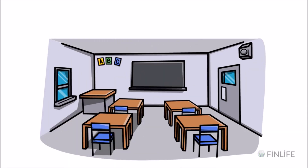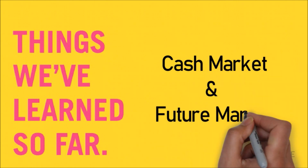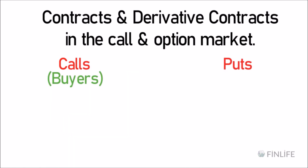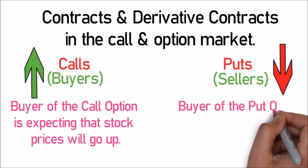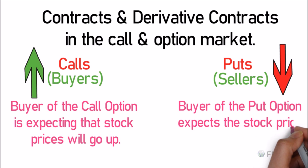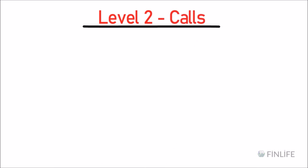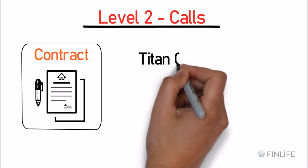Hi guys, welcome to this video lecture on call options — this is Level 2. We've already discussed cash markets and futures markets at Level 0 and Level 1. Now we'll discuss derivative contracts in the call market. In options there are two things: calls and puts. The buyer of a call option expects the stock price to go up; the buyer of a put option expects the markets to go down.